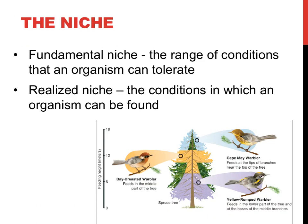All species exist because they can exploit a resource or survive in a condition better than any other organism can. The role that an organism fills, the range of conditions that an organism can survive, or where you find an organism in nature are all different definitions of the word niche. The fundamental niche of an organism is the range of possible conditions that an organism can survive, while the realized niche is where that organism actually exists in the world. For example, a kangaroo could potentially survive in Florida based upon the environment found there, but kangaroos are not naturally found in Florida — the fundamental niche of the kangaroo would include Florida, while the realized niche would not.